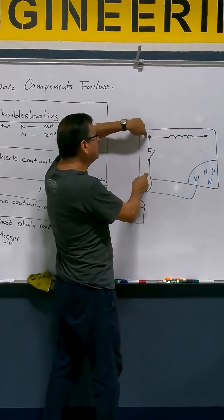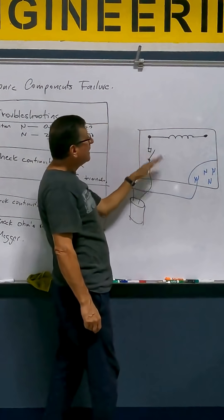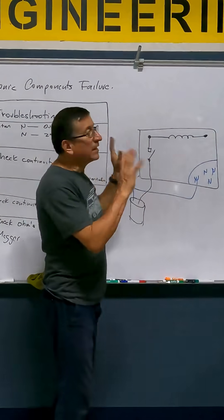What happens if between this and this is open? No continuity. The thermal contactor stays open and the relay is not working.